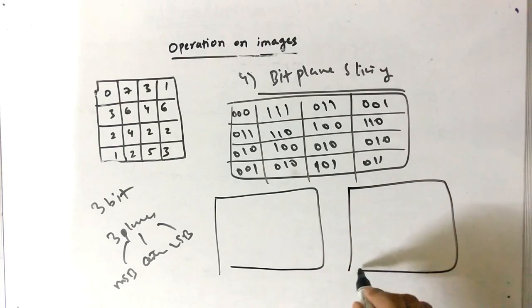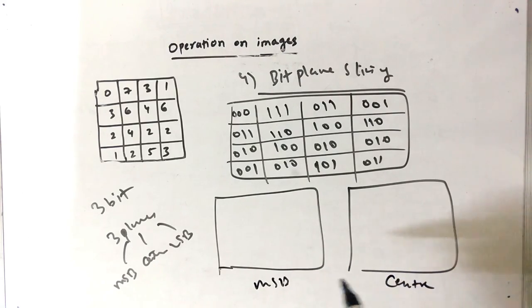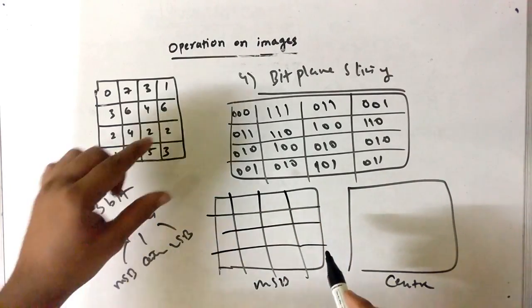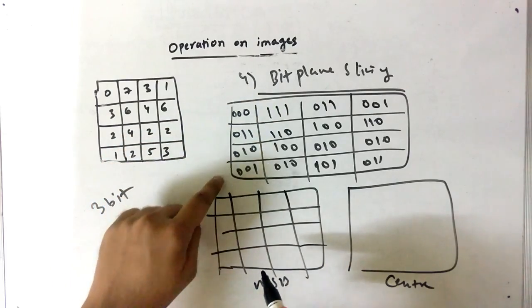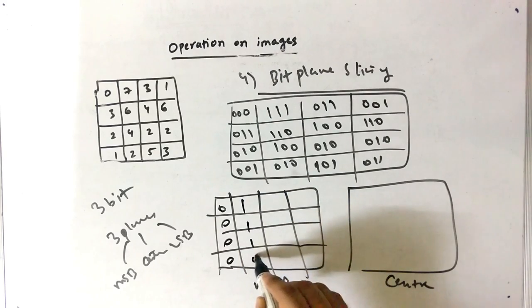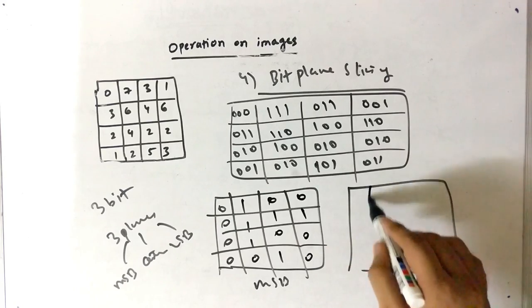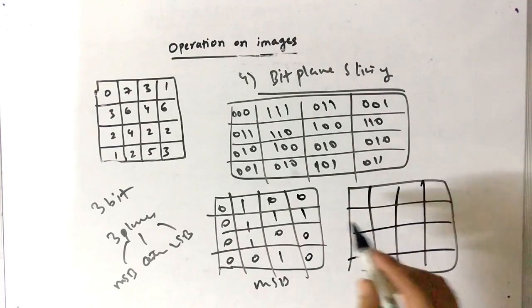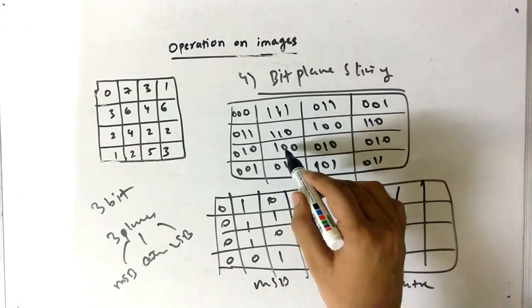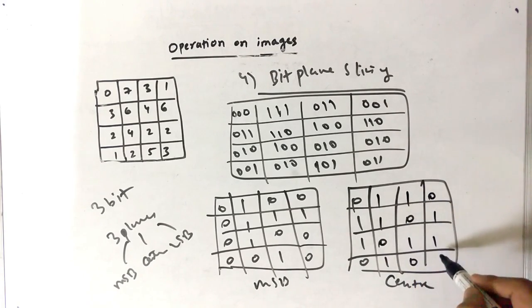For the MSB plane, the values are: 0, 0, 0, 0 — then 1, 1, 1, 0 — then 0, 1, 0, 1 — then 0, 1, 0, 0. For the center plane, the values are: 0, 1, 1, 0 — then 1, 1, 0, 1 — then 1, 0, 1, 0 — then 0, 1, 1, 1.